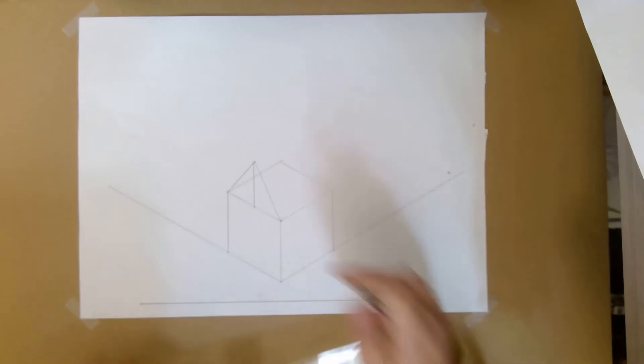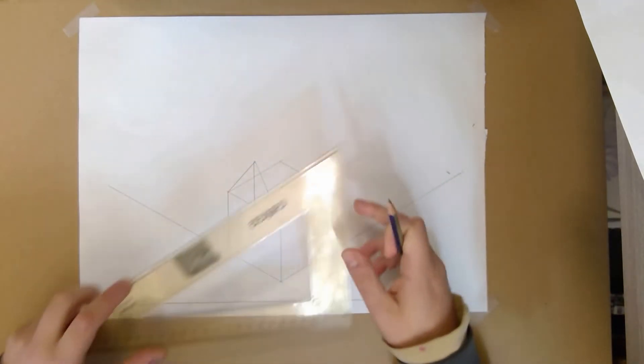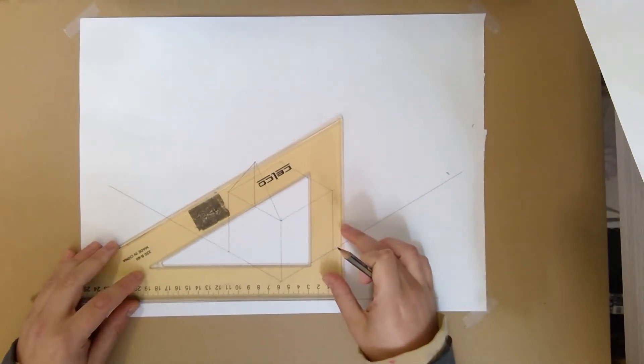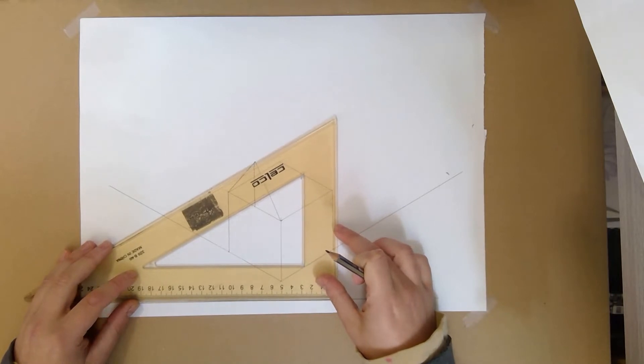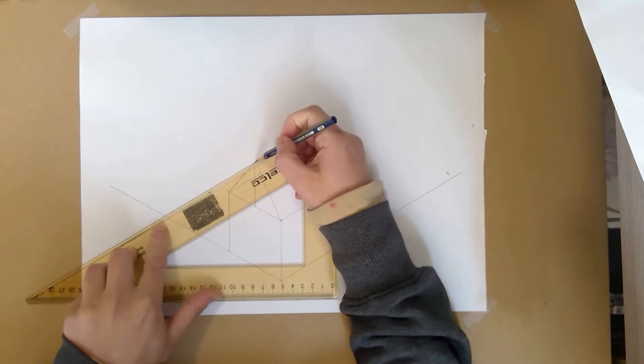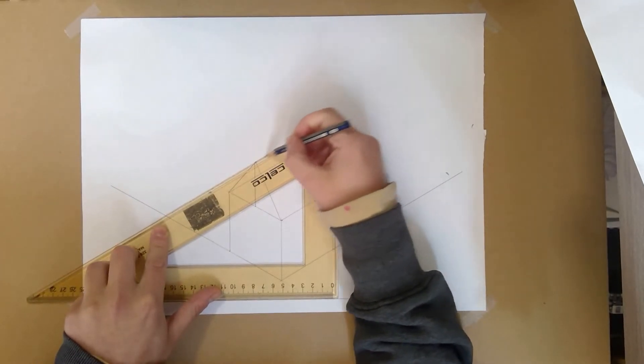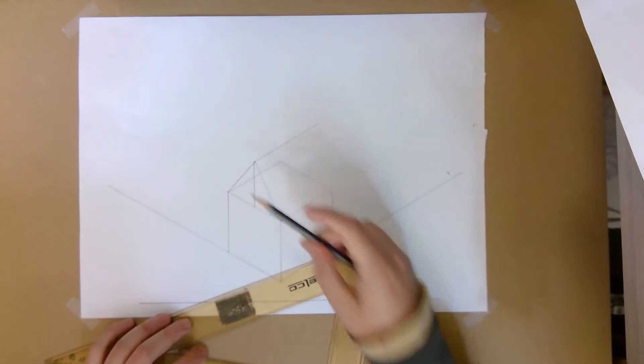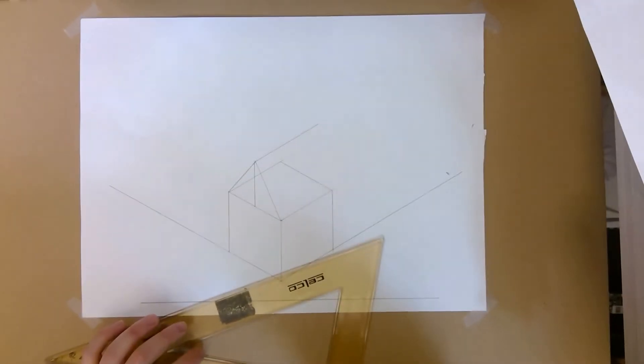So we have the front of our roof. We need to create the side part using our set square. We're going to line it up like so with the point of our roof. And when that interacts, we're simply going to draw a line as far as we need to go. It can go a bit further than that, perfectly further because we can always erase it.